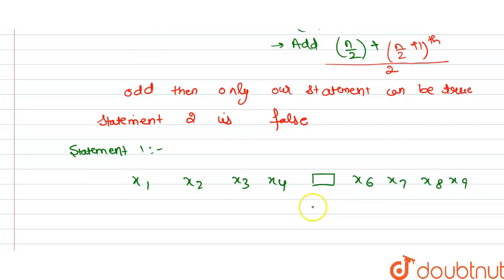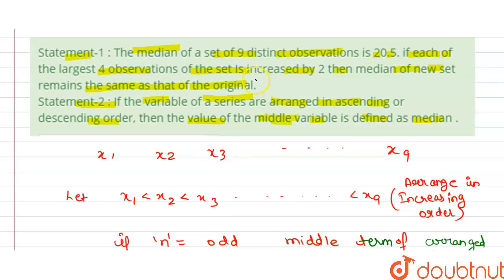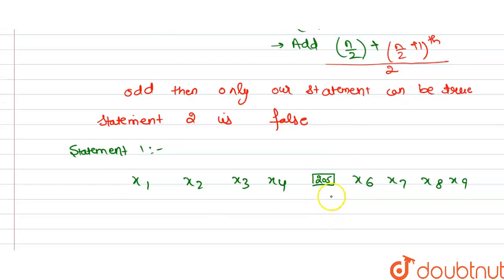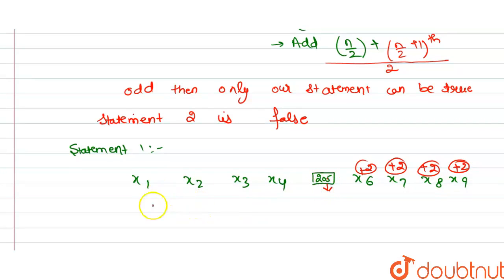Now it is given that if the largest 4 of the set are increased by 2, so if we increase x₆ + 2, x₇ + 2, x₈ + 2, x₉ + 2, then the order cannot be changed and the median will remain the same. So Statement 1 is true.